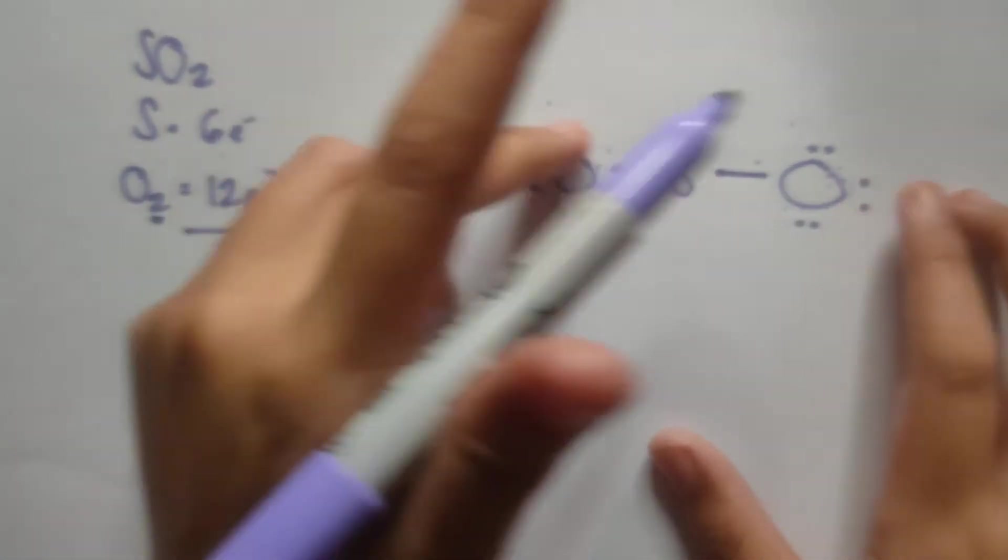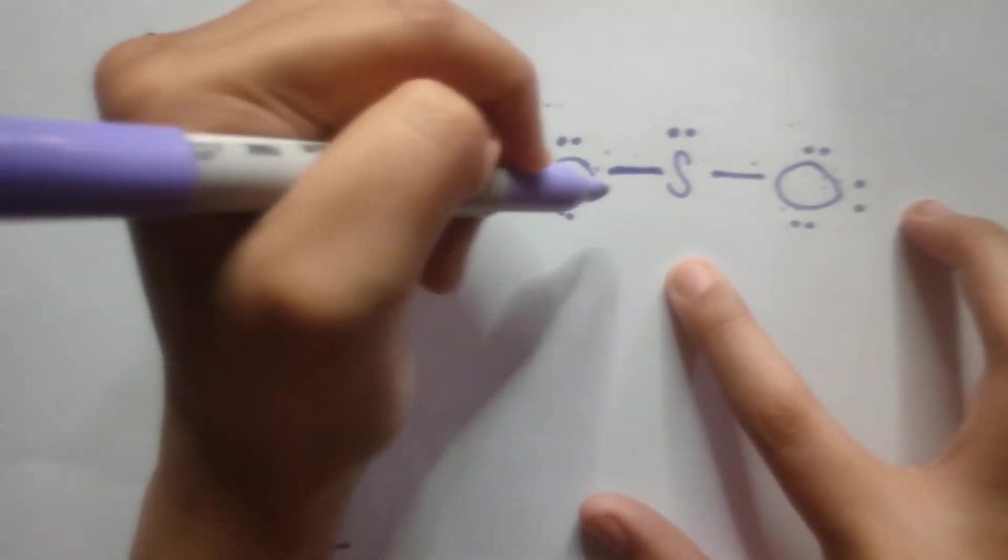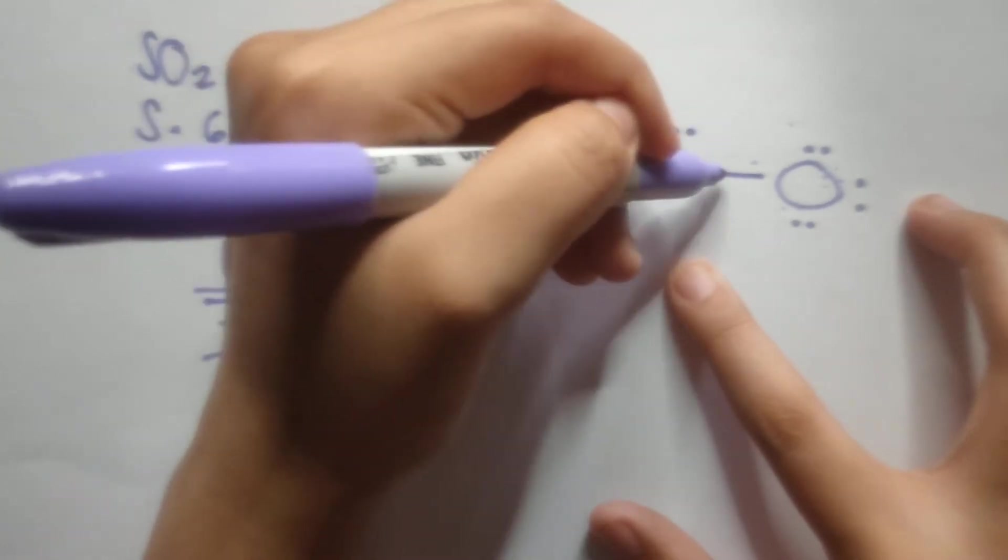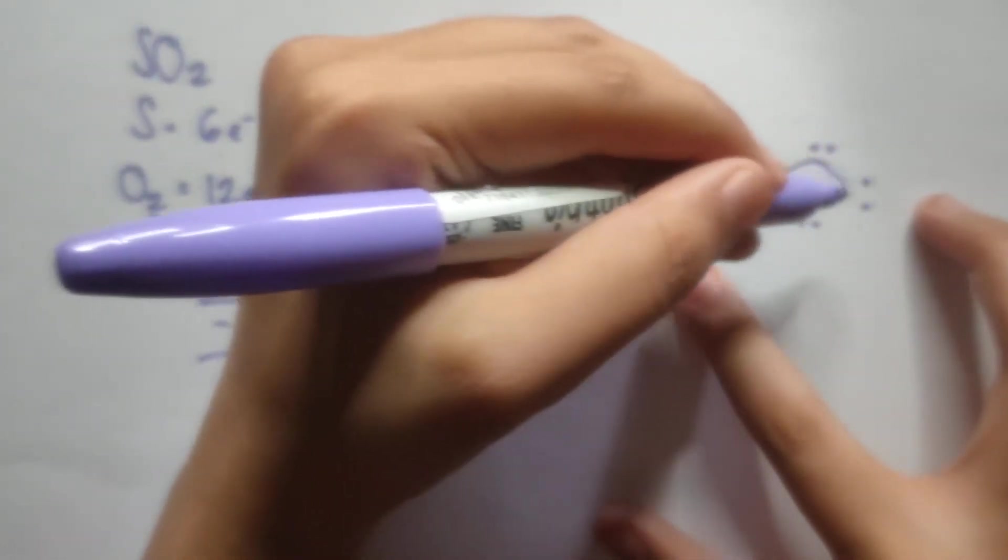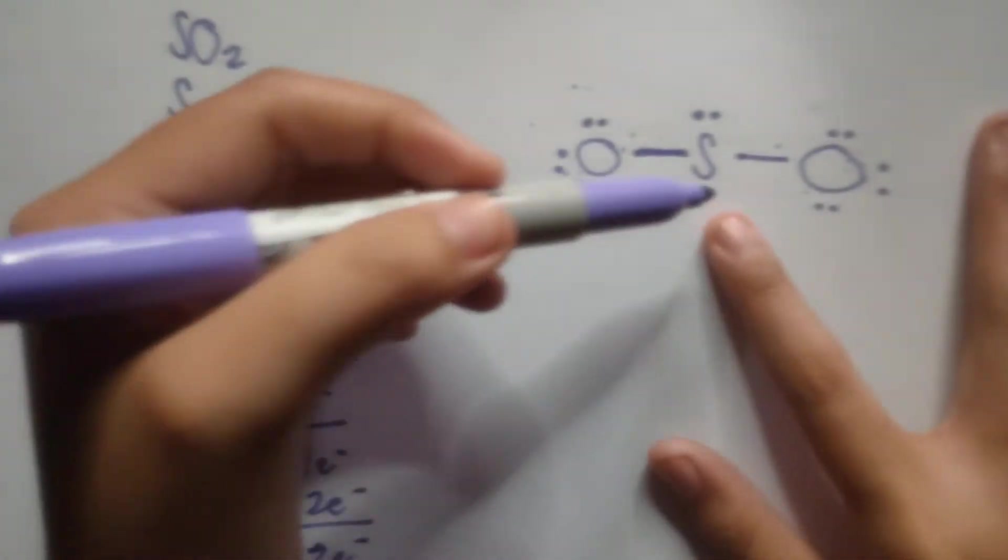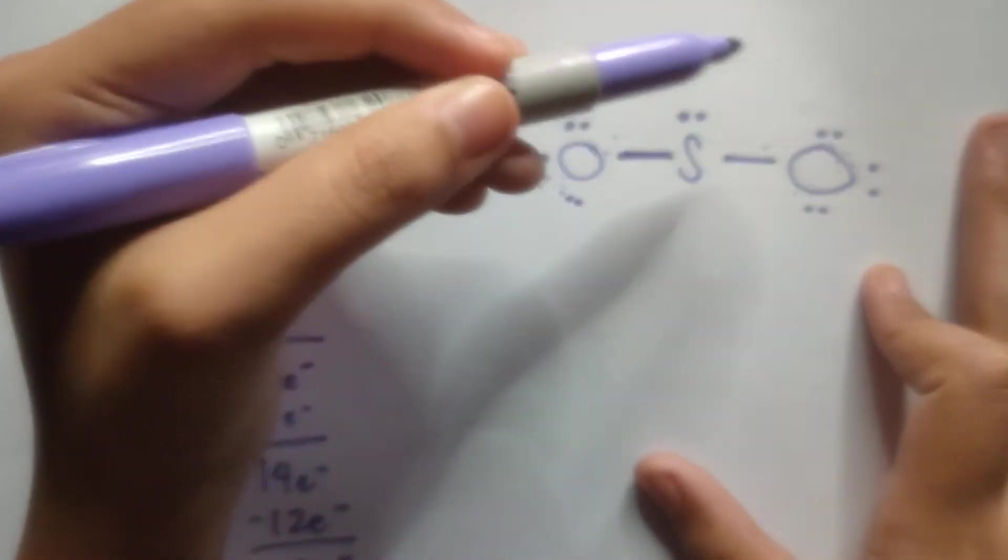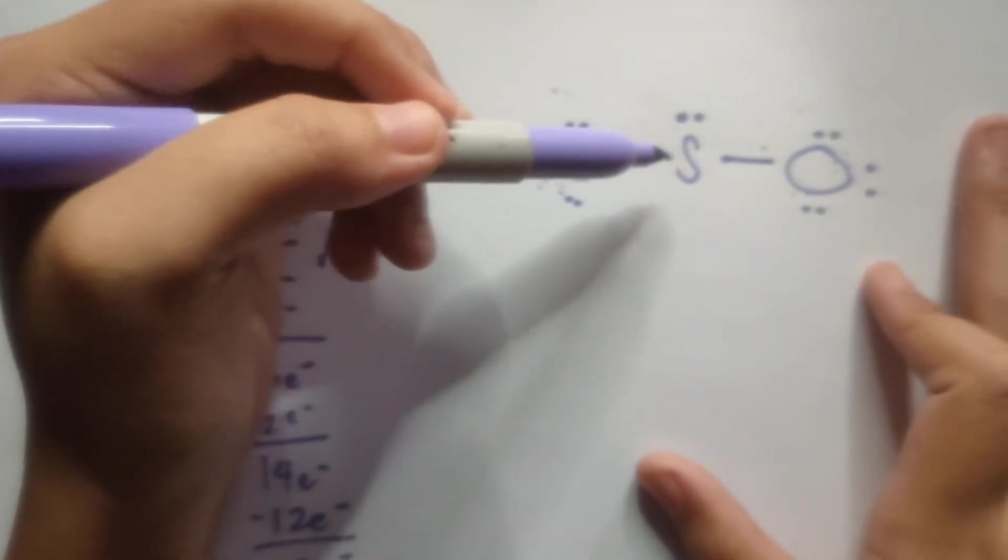Now let's count the total number of electrons, just to check. 1, 2, 3, 4, 5, 6, 7, 8, 9, 10, 11, 12, 13, 14, 15, 16, 17, 18. Now again, we followed this one. But the problem here is that although the oxygens follow the octet rule, sulfur does not.